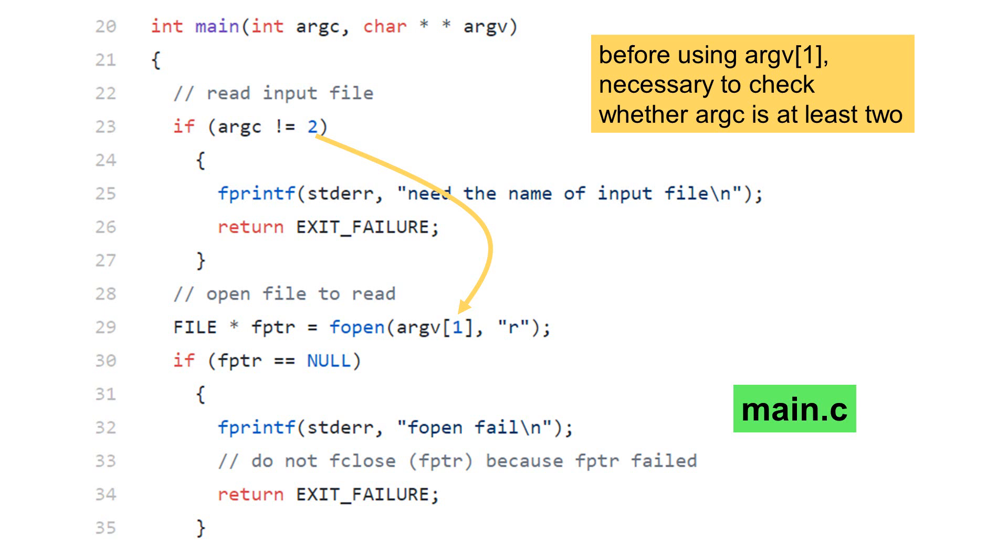This program uses argv[1] as the input file name. The program opens a file for reading. The function is fopen. The second argument 'r' means reading this file. If fopen succeeds, this function returns a file pointer.